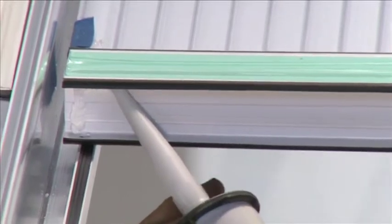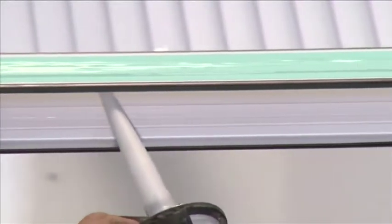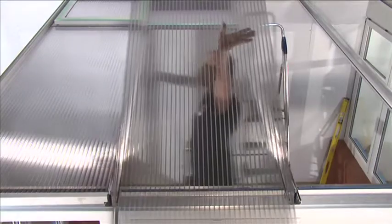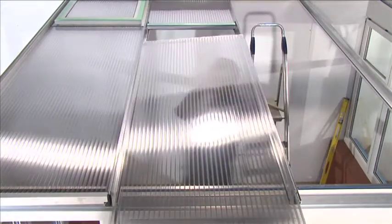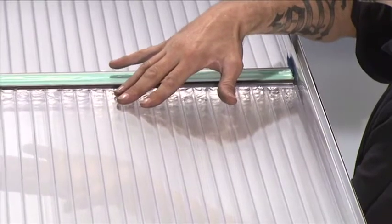Silicone the inside of the muntin bar. Peel off the protective film for the bottom glazing sheet and insert into the muntin bar.